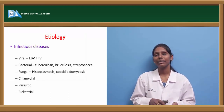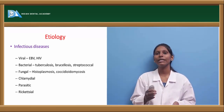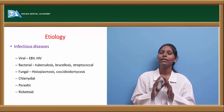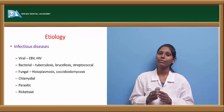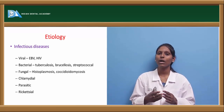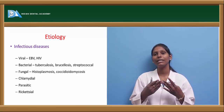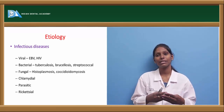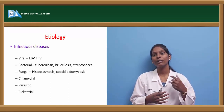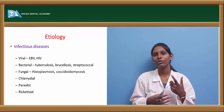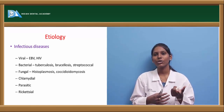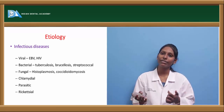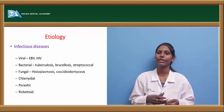Next is bacterial conditions. Any dental origin can lead to cervical lymphadenopathy. However, generalized lymphadenopathy can be seen in case of tuberculosis, most commonly involving cervical lymphadenopathy, and axillary lymphadenopathy can also be seen. This is the reason it is also called a cold abscess. Brucellosis and streptococcal infections can also lead to generalized lymphadenopathy.